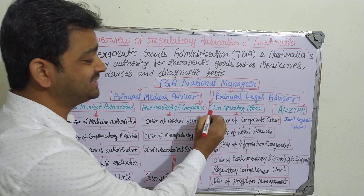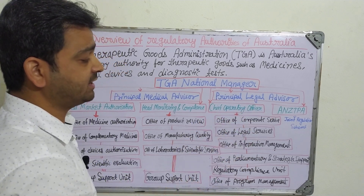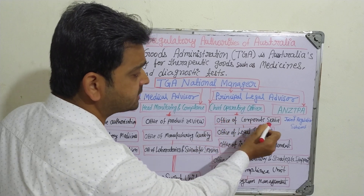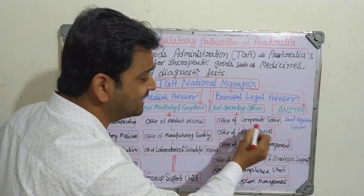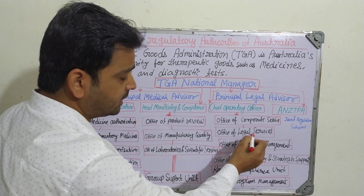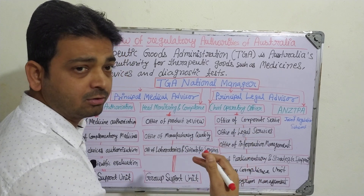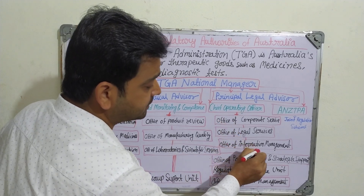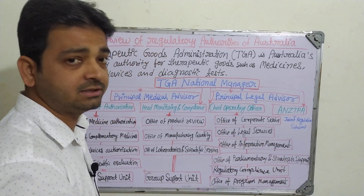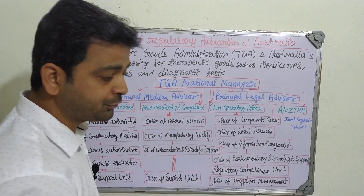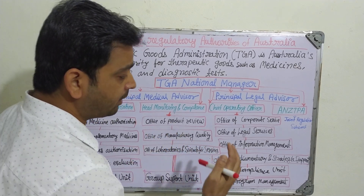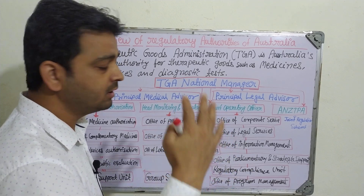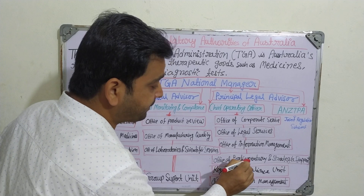The Chief Operating Officer oversees the Office of Corporate Services, the Office of Legal Services — handling governmental permissions and legal proceedings — and the Office of Information Management, which manages all generated data including clinical trial data, preclinical data, adverse effects, side effects, and contract-related information.